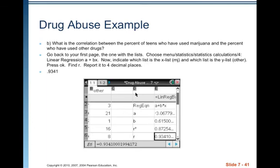What is the correlation between the percent of teens who have used marijuana and the percent who have used other drugs? Go back to your first page with the lists. Choose Menu, Statistics, Stat Calculations, and choose number 4: Linear Regression A plus BX. The process is similar to doing one-variable stats, except instead of one list you need to indicate an X list and a Y list — the marijuana list as the X list and the other drugs list as the Y list. Press OK and find R, your correlation coefficient, reported to four decimal places: R = 0.9341.